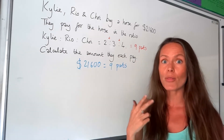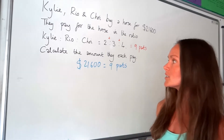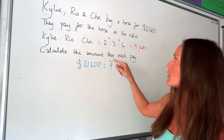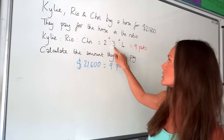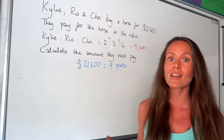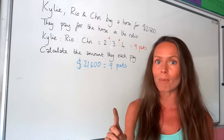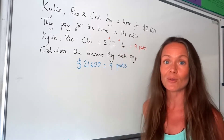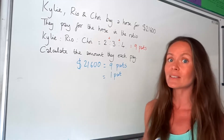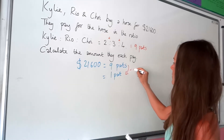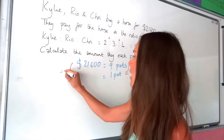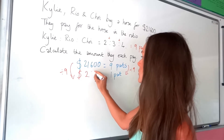In this question we've got three calculations — we have to work out the amount each person pays for the horse: Kylie is two parts, Rio is three parts, and Troy is four parts. Just like in the other ratio questions, we first find the value of one part. If we've got nine parts but need to find one part, we divide by nine. So dividing $21,600 by nine gives us $2,400. We've now worked out that one part equals $2,400.